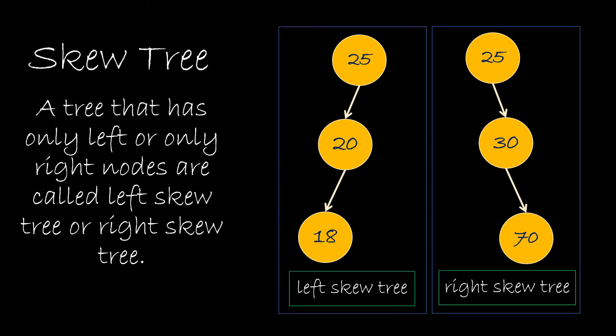Skew trees is the one where there is either left or right node only at each level. The skew trees that only have left nodes are called left skew trees while the ones that have only right nodes are called right skew trees.